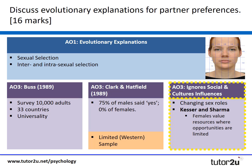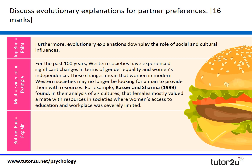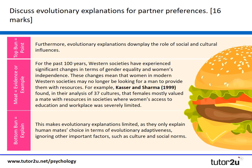For our third and final evaluation point, evolutionary explanations downplay the role of social and cultural influences. Try to avoid words like 'limited' or 'ignores' and instead use phrases like 'downplay' or 'overstate.' For the past hundred years, western societies have experienced significant change in terms of gender equality and women's independence, meaning women may no longer be looking for a man to provide resources. Kestner and Sharma found in their analysis of 37 countries that females mostly valued and mated with resourceful men only in societies where women's access to education and workplaces were limited, making evolutionary explanations limited to evolutionary adaptiveness and overlooking cultural and social norms.